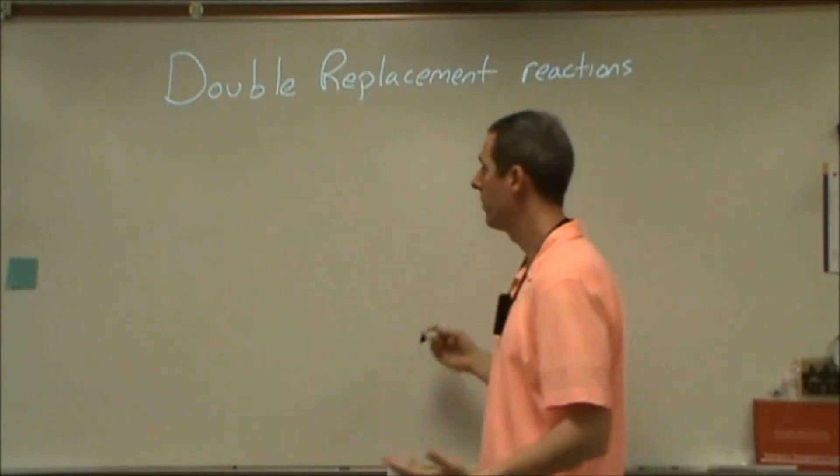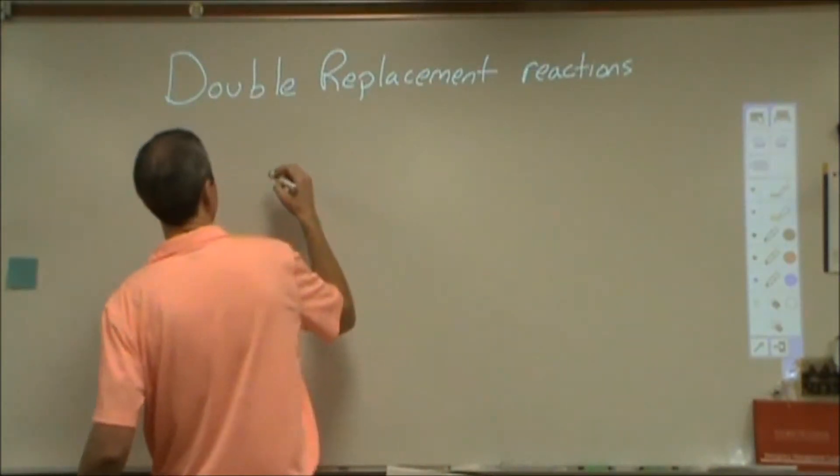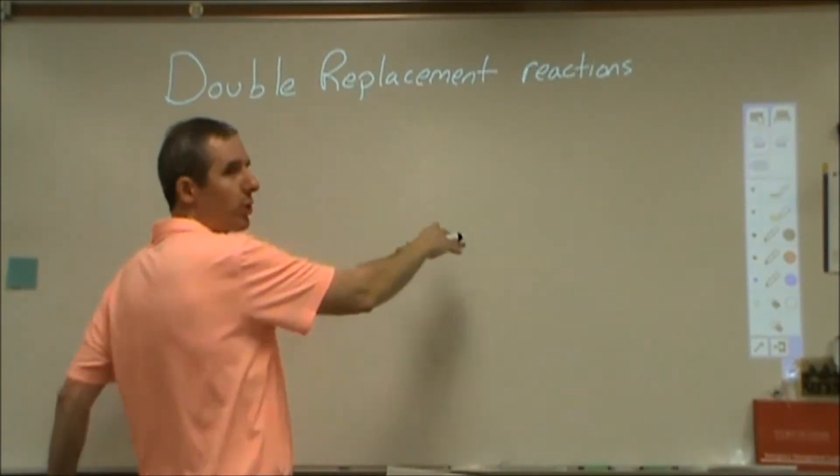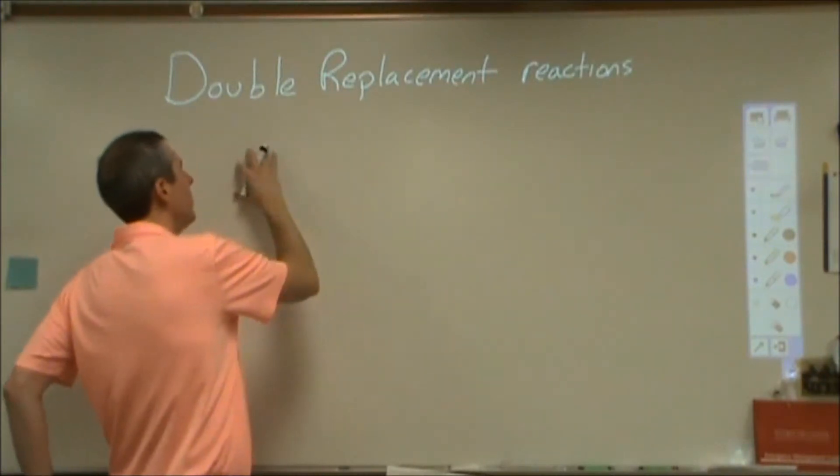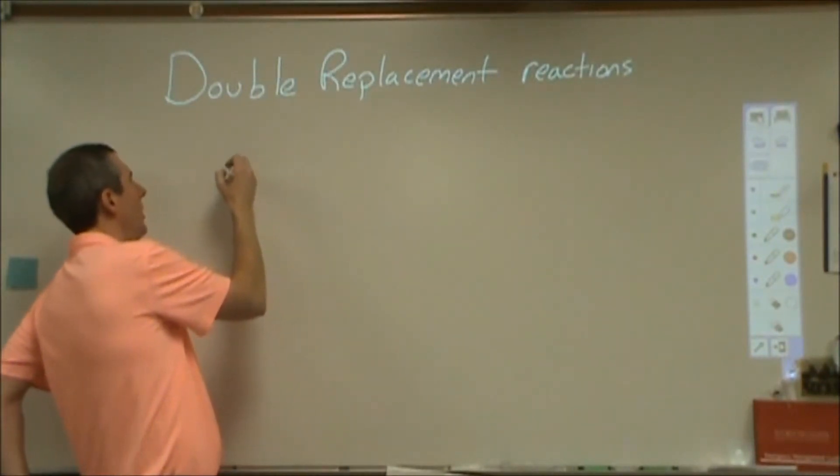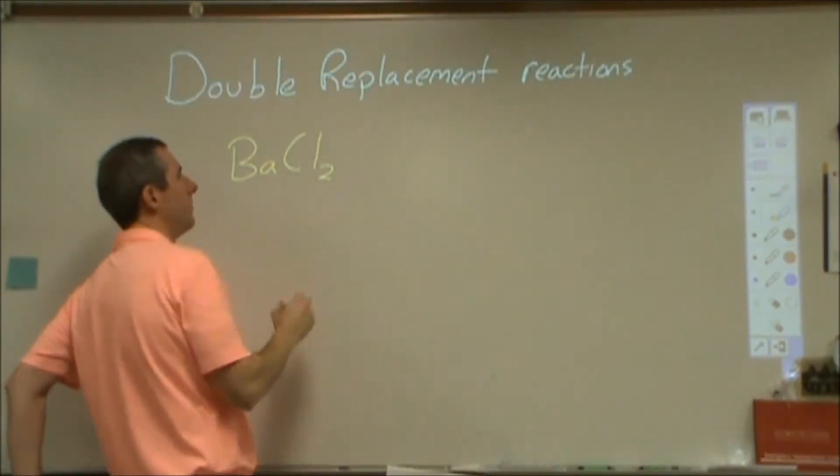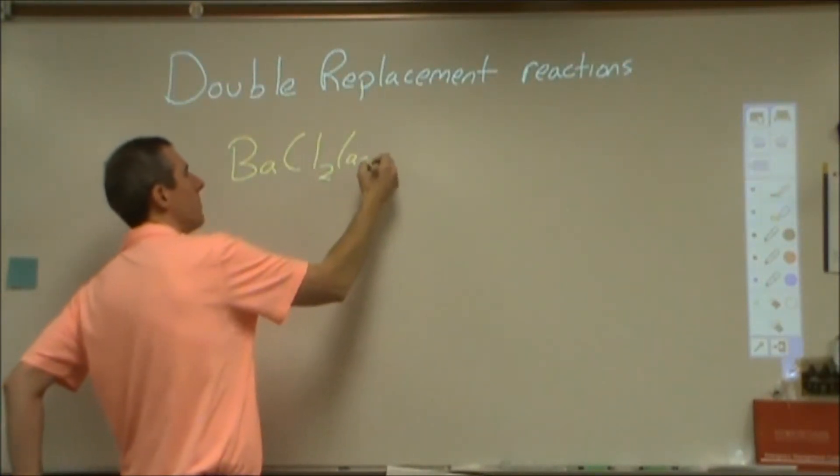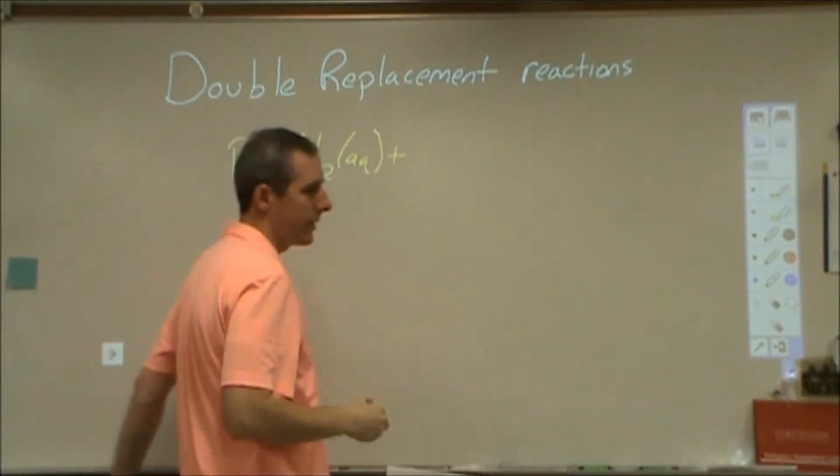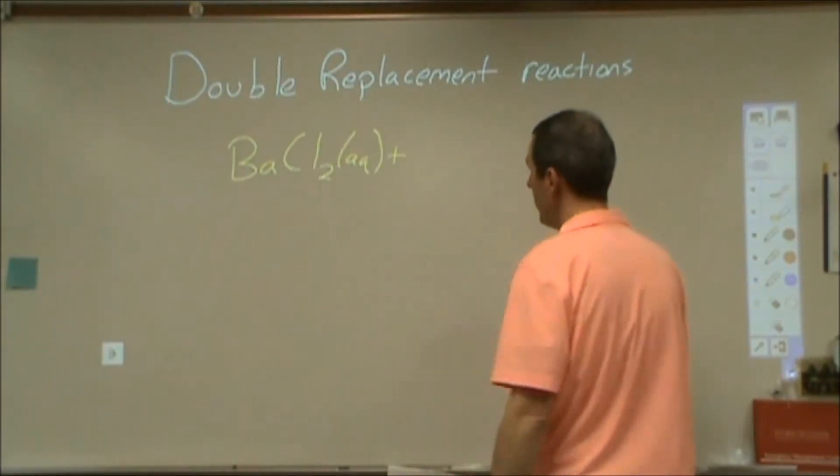In a double replacement reaction, you're going to be taking two compounds and doing a reaction between them. Usually they're going to both be ionic compounds, and usually they're going to be aqueous to start. So let's say hypothetically we took some barium chloride in solution, and let's say we react that with some nickel to sulfate.